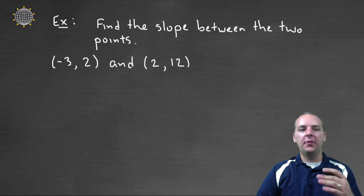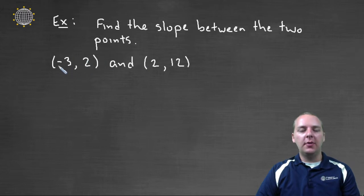Let's practice a few examples where we find the slope between two points. So here we've got two points, we have an x-y point here negative three two, and another x-y point two twelve. The main thing to remember here is the formula for slope, we can't really do much without that.